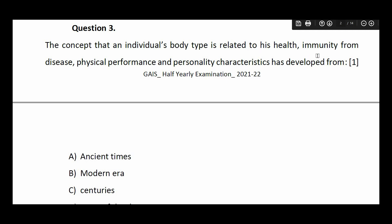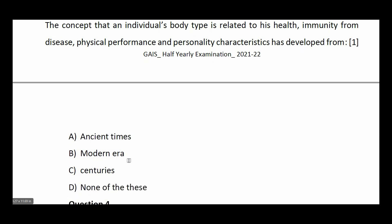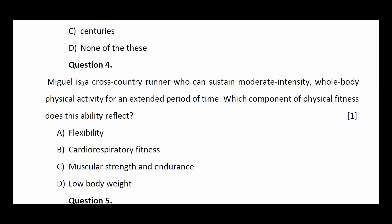Question number three: the concept that an individual's body type is related to his health, immunity from disease, physical performance, and personality characteristics has developed from — ancient times, modern times, centuries, or none of these. The answer is ancient times.